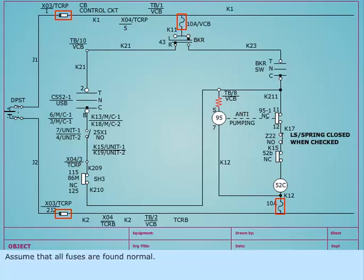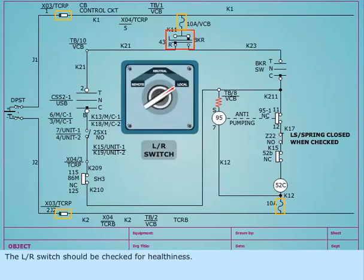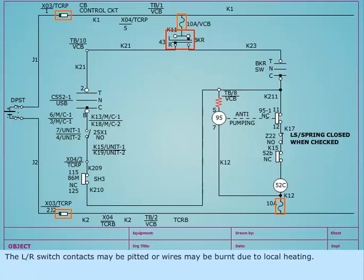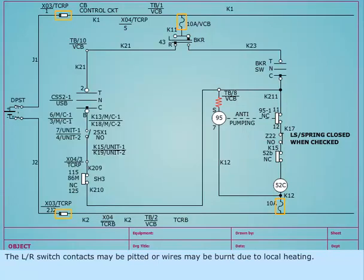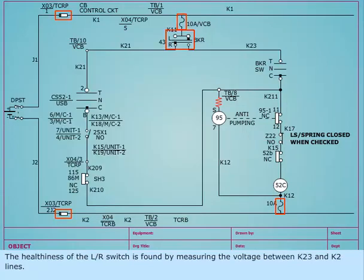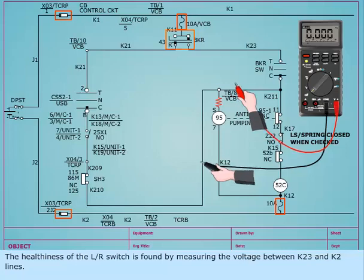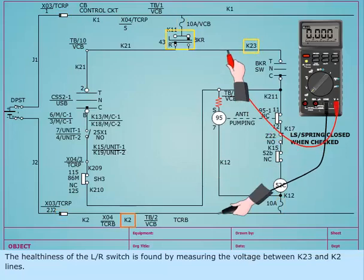Assume that all fuses are found normal. The L/R switch should be checked for healthiness. The L/R switch contacts may be pitted or wires may be burned due to local heating. The healthiness of the L/R switch is found by measuring the voltage between K23 and K2 lines.